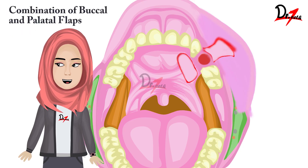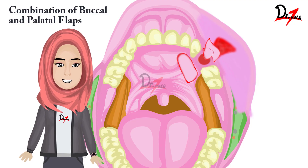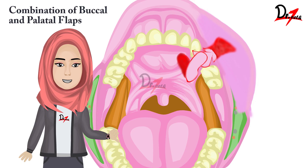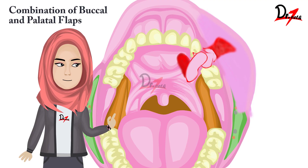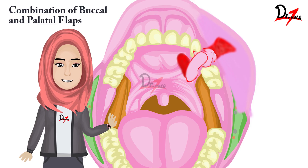For the combination of buccal and palatal flap: in cases of large defects, closure with a single flap might not succeed, so we can use both the palatal and the buccal flap together for a two-layered closure. In addition to providing greater strength, this also minimizes contraction of the repair.